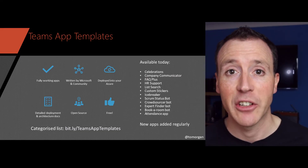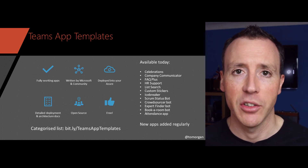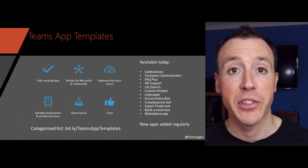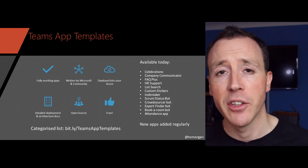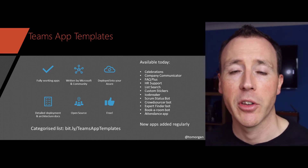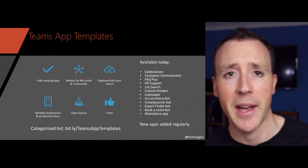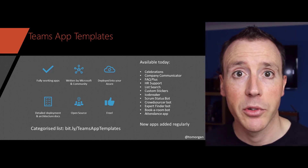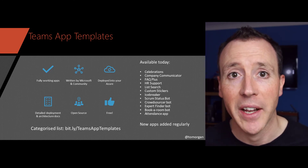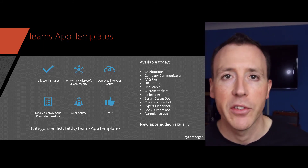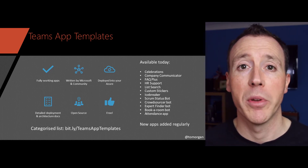The final thing I want to talk about are app templates. We've been through the three big pillars — Microsoft Graph, the Teams UI, and bots. But I want to spend some time on app templates because I think they're amazing. What if I told you Microsoft has a collection of fully working Microsoft Teams applications, written by Microsoft and the community, that you can deploy into your Azure tenant really easily. There's proper documentation, architecture diagrams, and cost estimations. They're completely open source, so you can change them, and they're completely free.